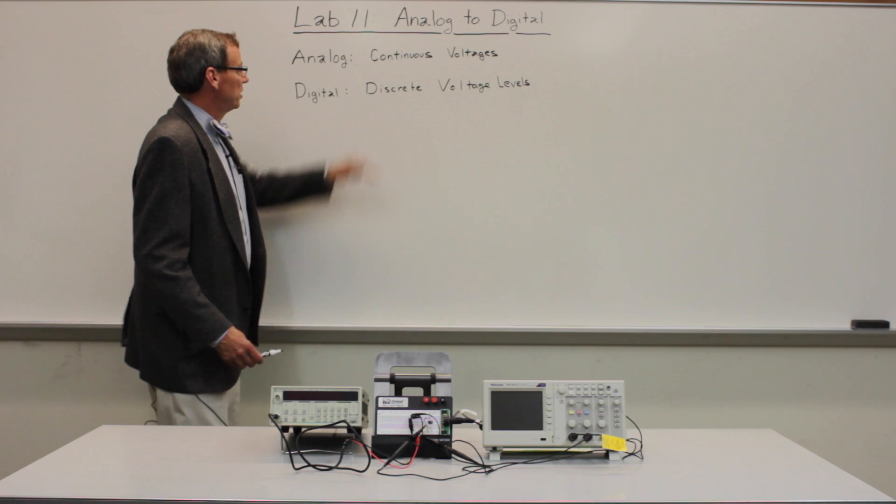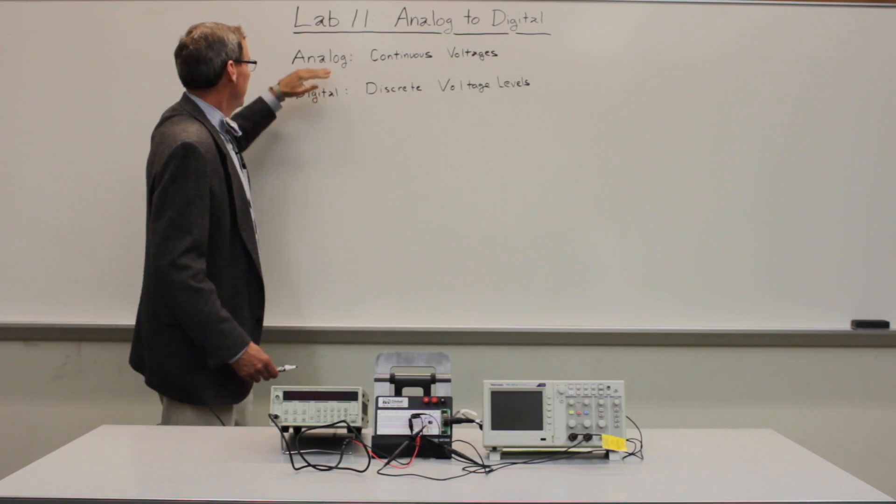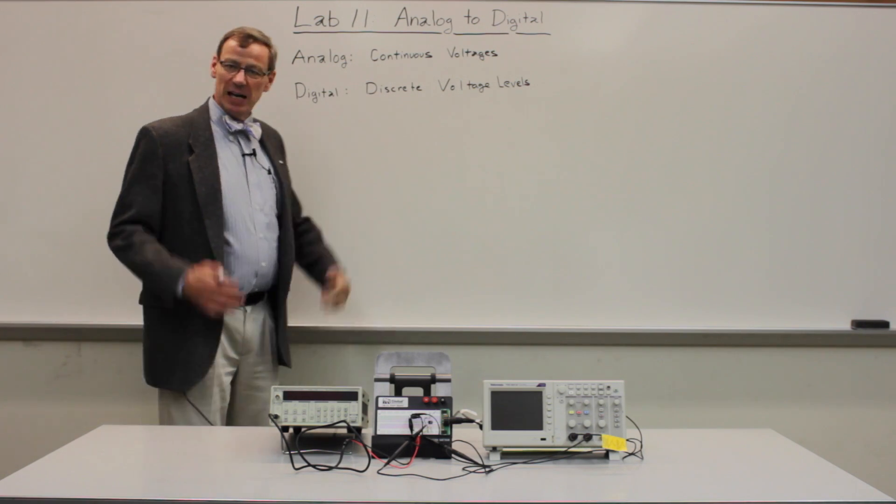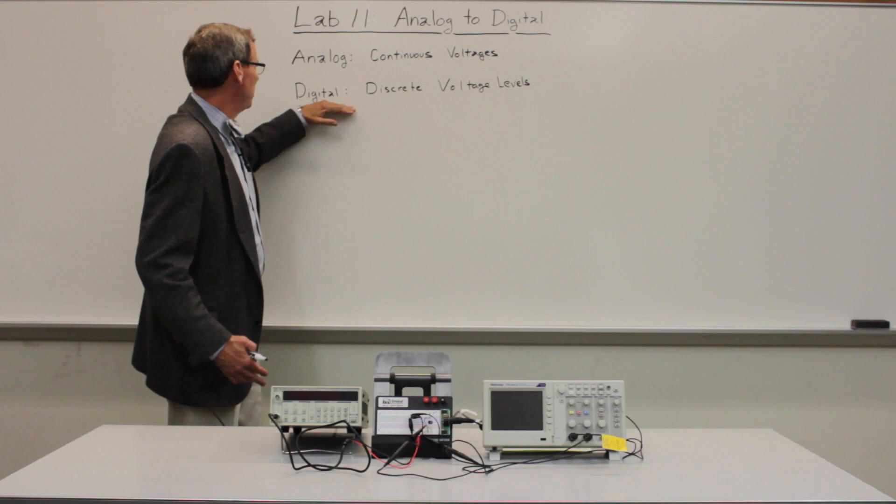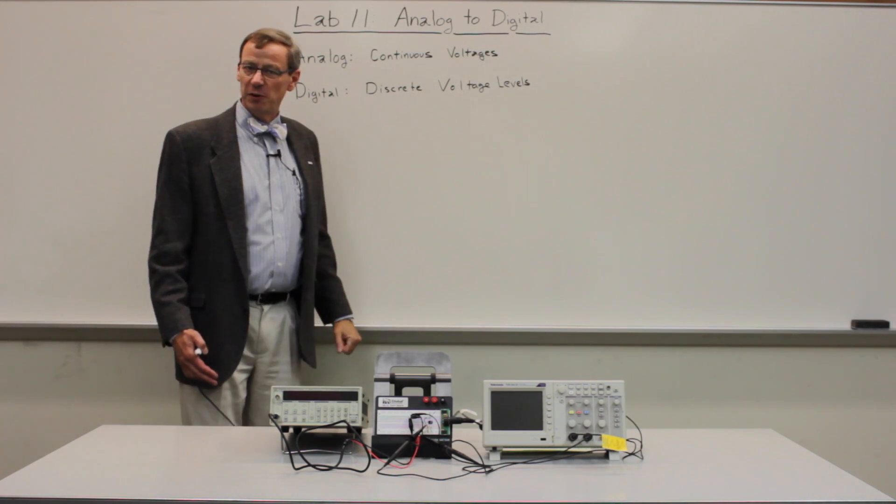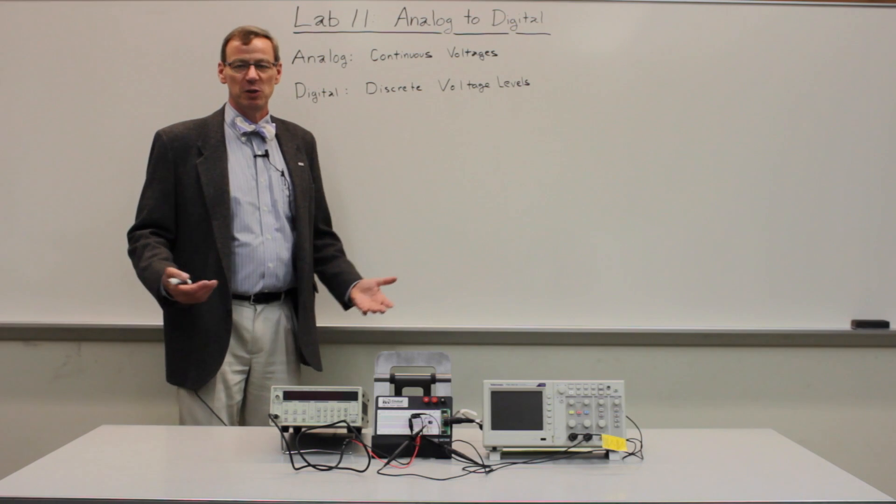Today we're going to be doing lab 11, which is looking at the transition from analog to digital electronics. Analog electronics basically allows us to have continuous voltage, any voltage level we want, whereas digital electronics has discrete voltage levels. Typically that's two voltage levels, but it could be more than two voltage levels.